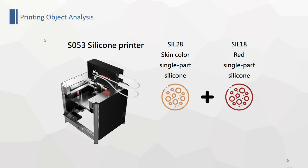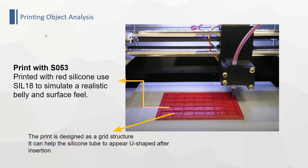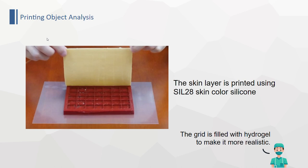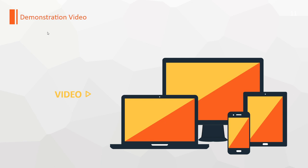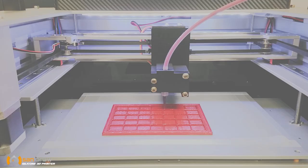We chose the SL53 silicone 3D printer to print this teaching aid using CO28 skin-colored one-part silicone and CO18 red one-part silicone. The picture shows the process of printing. We chose red silicone to simulate the actual abdomen, and skin color to represent the skin. Finally, we glue them together. For the next part, we are going to show you the video of the printing process.